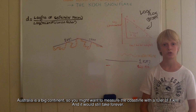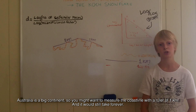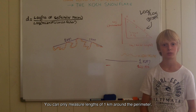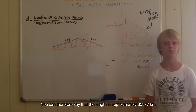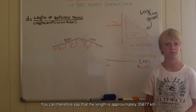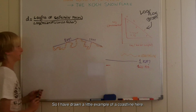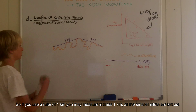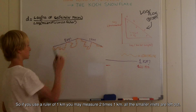Australia is a big continent, so you might want to measure the coastline with a ruler of 1 km, and it would still take forever. You can only measure lengths of 1 km around the perimeter. All the smaller inlets cannot be measured and are left out. You can therefore say that the length is approximately 35,877 km. So I've drawn a little example of a coastline here. If you use a ruler of 1 km, you may measure 2 times 1 km, as all the smaller inlets are left out.